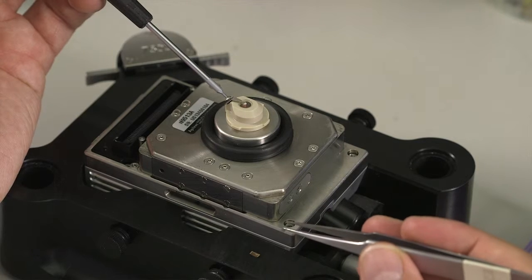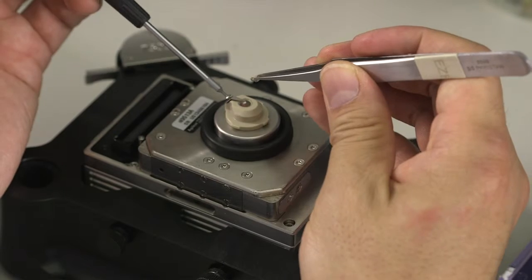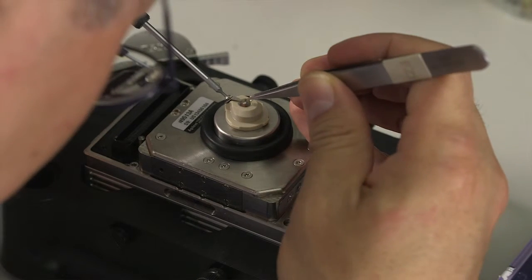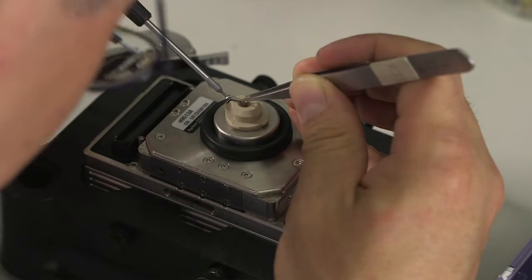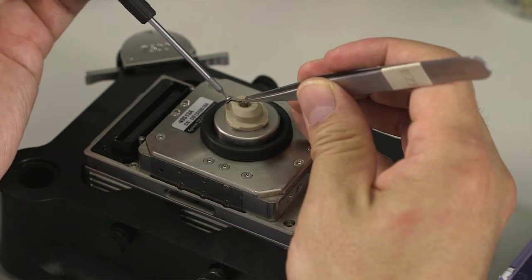At the same time, pick up your cantilever using the tweezers and insert it underneath the spring, and then gently tighten the spring using the screw.